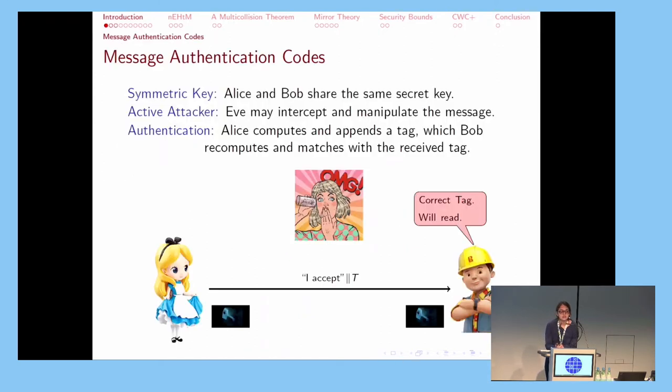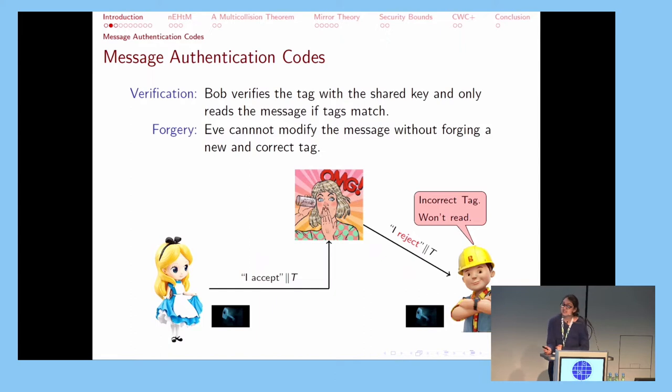As we all know, both the receiver and sender share the same secret key for message authentication codes in the symmetric key setting. Here Alice wants to send the message "I accept" to Bob, and Eve is an active adversary who might change the message before it reaches Bob. However, Alice appends a tag T to the message, which she computes using the secret key that she and Bob share. Bob will only read the message if he can verify the tag using his copy of the key. If Eve changes the message, the new message may not match the old tag and Bob will not read it.